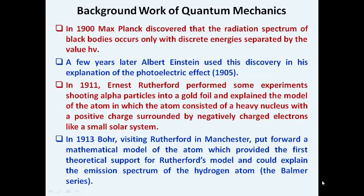Niels Bohr, who was a close follower of Rutherford, while working with him in Manchester, put forward a mathematical model of the atom. This provided the first theoretical support for Rutherford's model and could explain the emission spectrum of the hydrogen atom for the Balmer series.